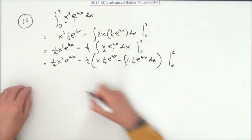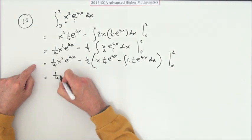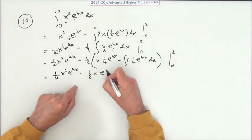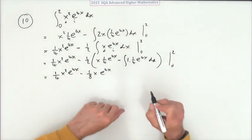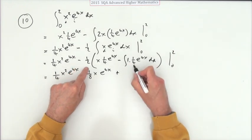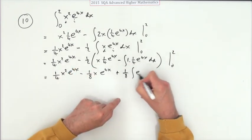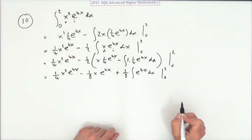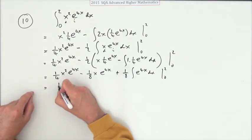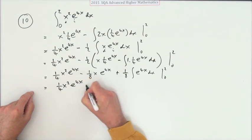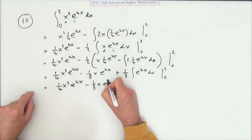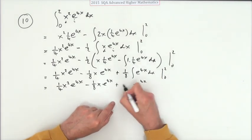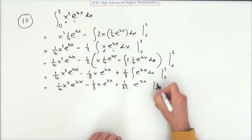So we've got a quarter x² e^(4x), minus an eighth of x e^(4x) — see there are common factors kicking in now — and plus an eighth of the integral of e^(4x) dx, all to be evaluated. Completing that last integral, e^(4x) divides by 4 making it 1/32. So the full expression is a quarter x² e^(4x) minus an eighth x e^(4x) plus 1/32 e^(4x), all to be evaluated.